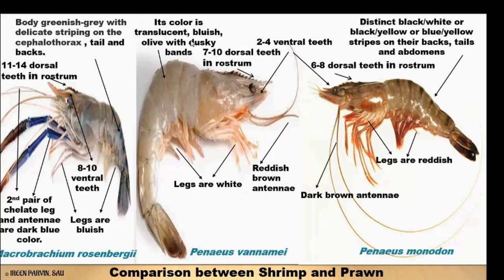In the case of Penaeus vannamei, the color is translucent bluish-olive with dusky bands. Seven to ten dorsal teeth are present in the rostrum. Legs are white in color, and reddish-brown antennae are present.